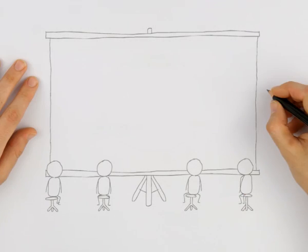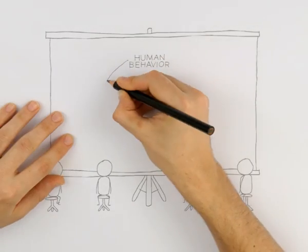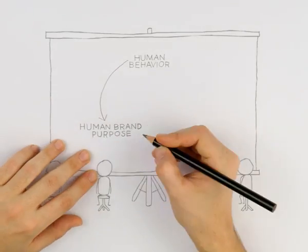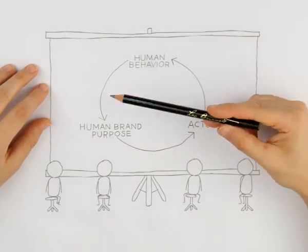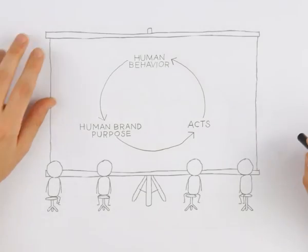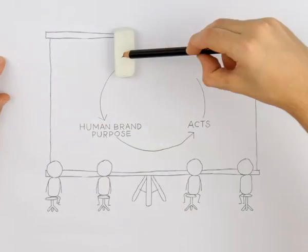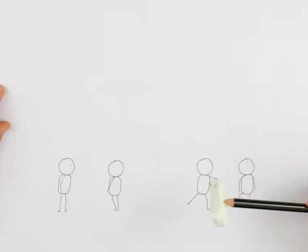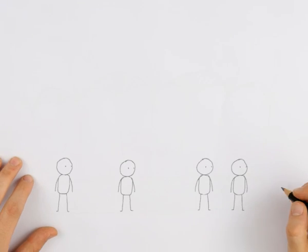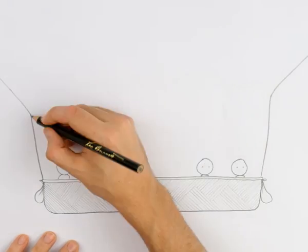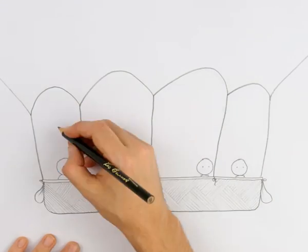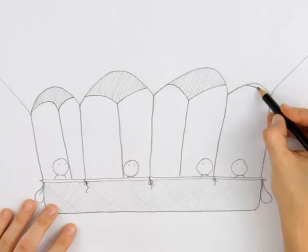Start from human behavior. Find a human brand purpose. Think about acts that can influence human behavior. Now, our job is to create ideas so powerful that truly move people and are really relevant to them.